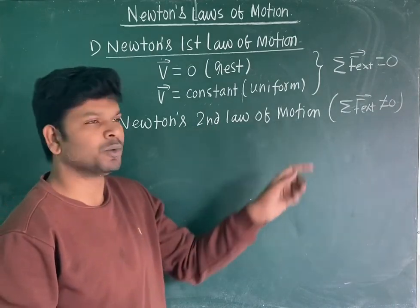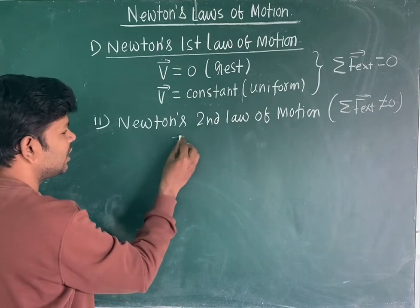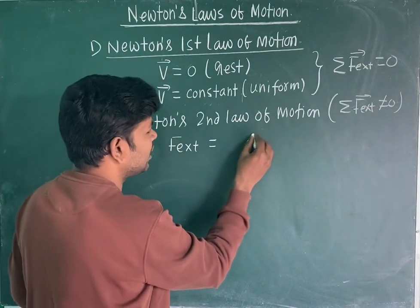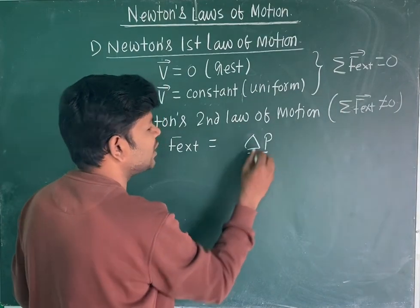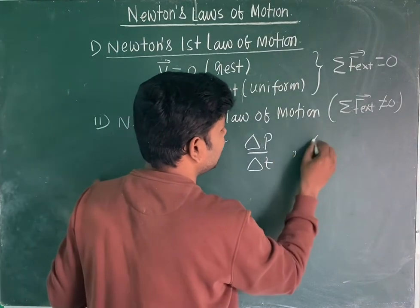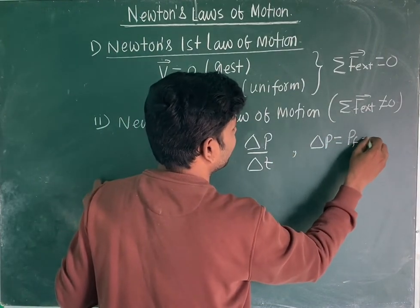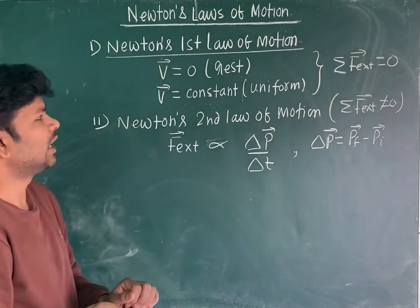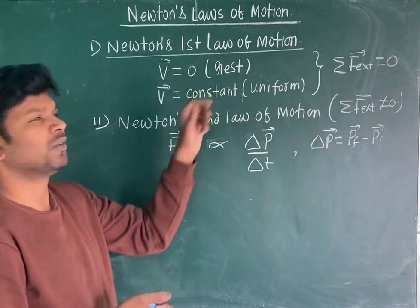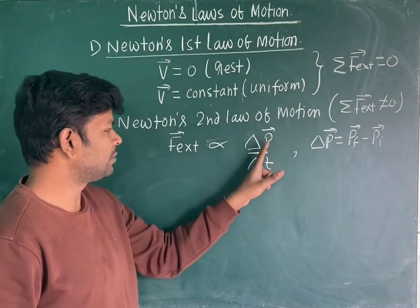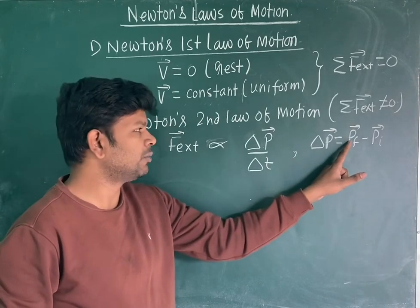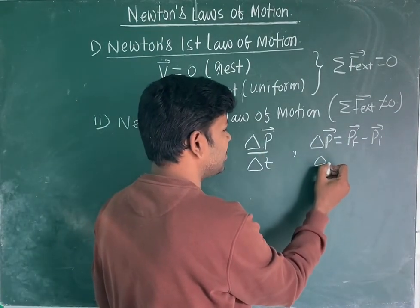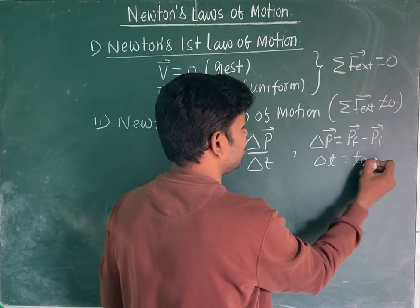According to Newton's second law of motion, if a net external force is acting on the system, then the rate of change of momentum of the particle — rate of change of momentum is change in momentum with respect to time — is ΔP upon ΔT, where ΔP is the change in momentum: P final minus P initial. ΔT is the time interval during which this change in momentum is taking place, basically T2 minus T1.